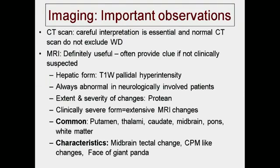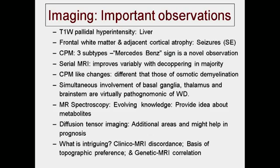To conclude: careful interpretation of CT scan is essential, and a normal CT scan does not exclude Wilson's disease. MRI is very useful and often provides a clue even when clinically not suspected. In the hepatic form, you may see T1-weighted pallidal hyperintensity. MRI is always abnormal in neurologically involved patients. Common areas are putamen, thalamus, caudate, midbrain, pons, and white matter. Characteristic findings include tectal changes, CPM-like changes, and face of giant panda. T1 pallidal hyperintensity means liver involvement.